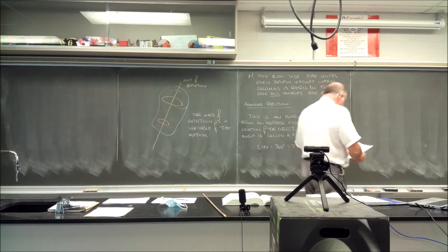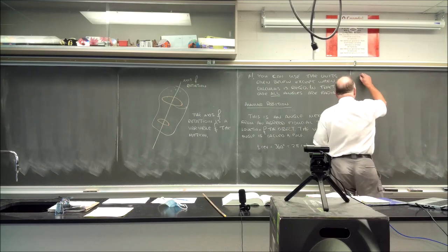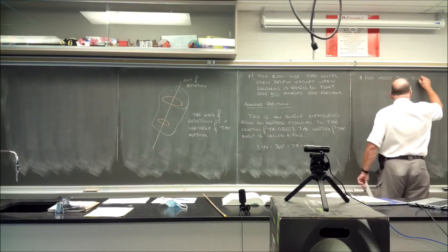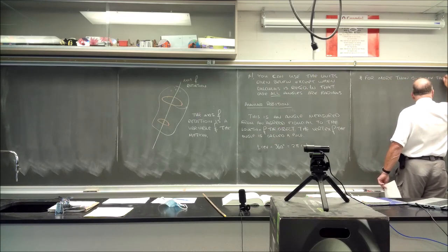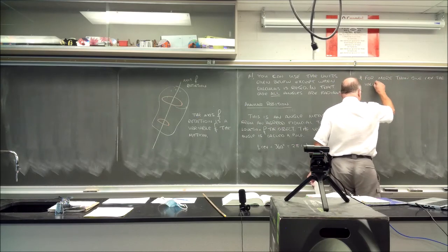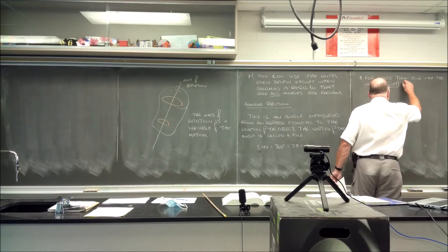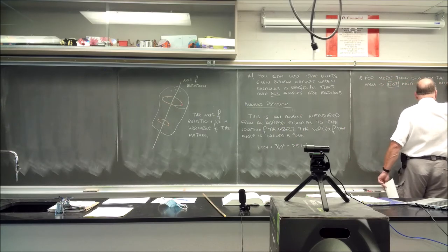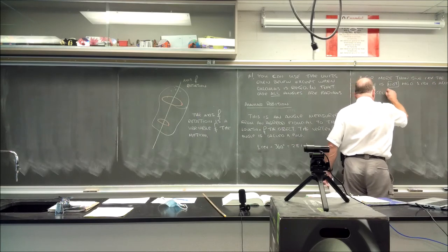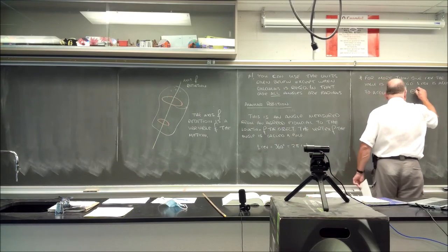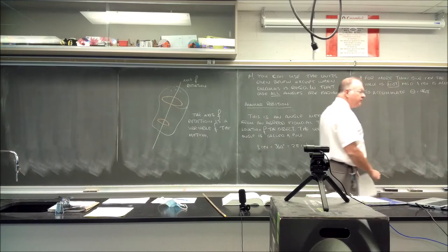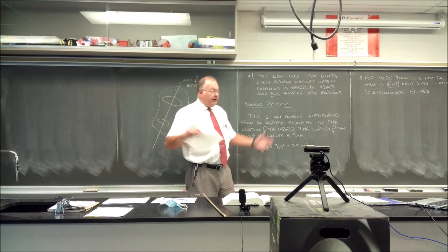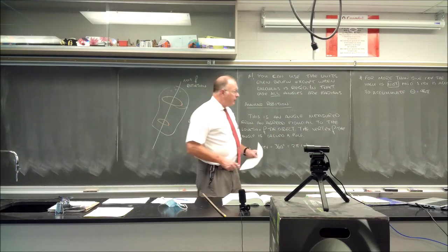For more than one revolution, the value of theta is not taken mod 360° — it is allowed to accumulate. So you might have θ = 48π meaning 24 revolutions. This allows for winding, such as winding a rope around a spindle, so the information is not lost as a modulus.